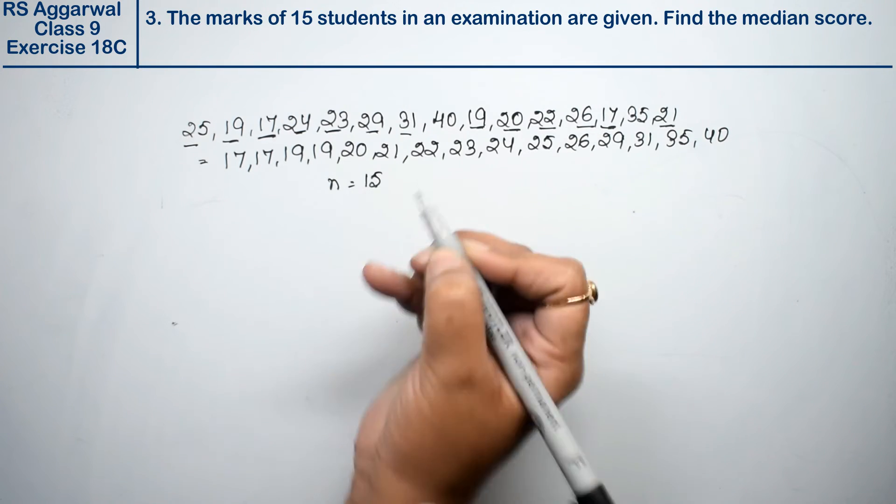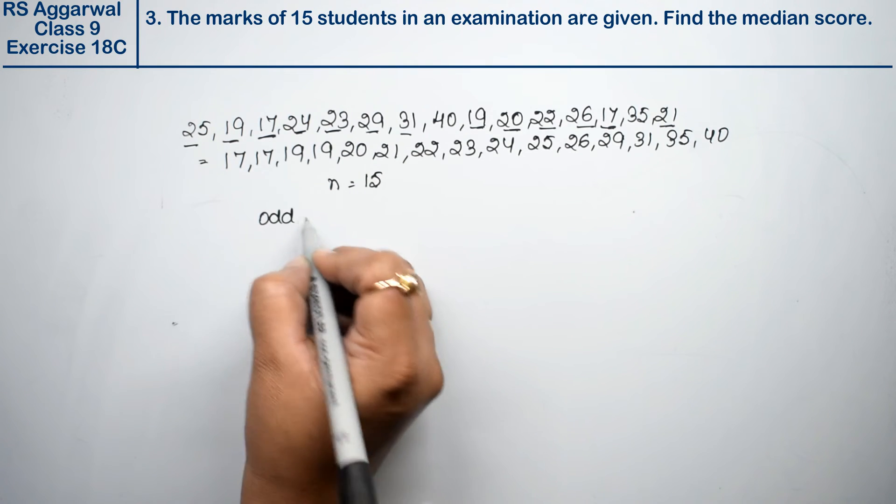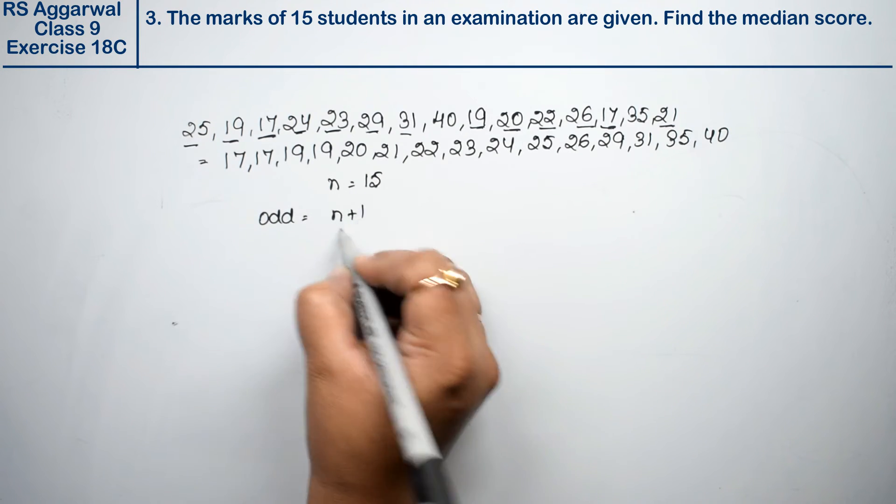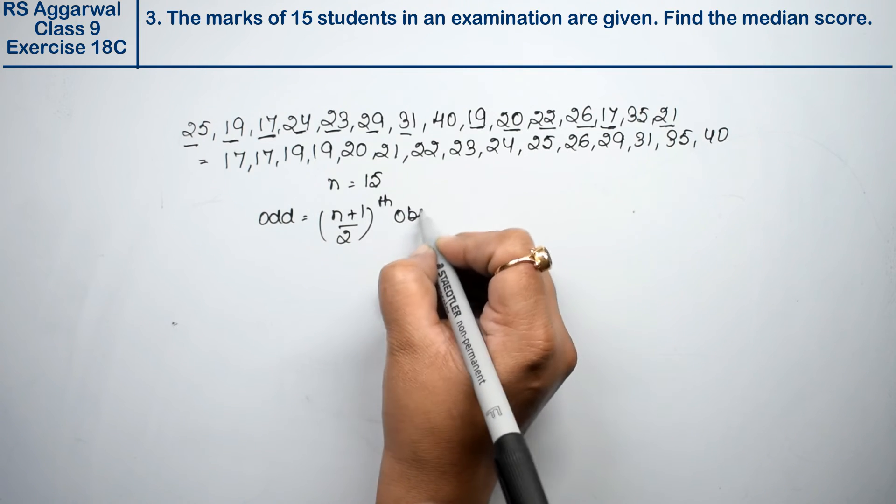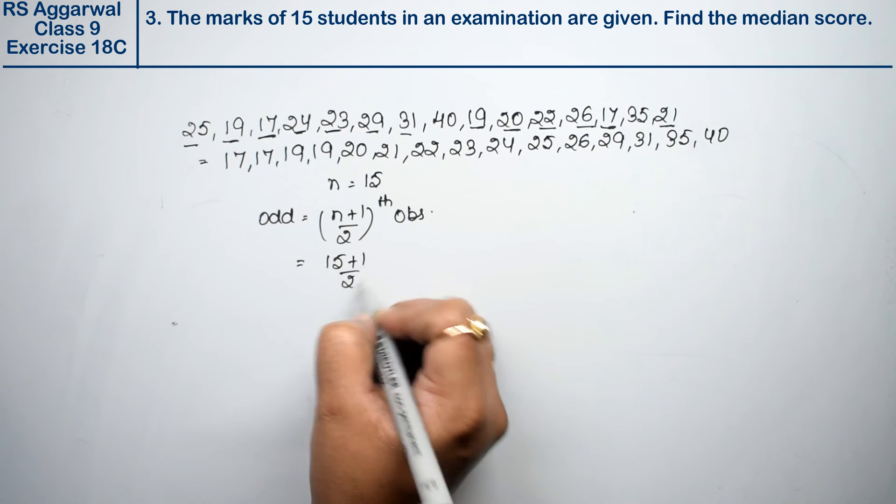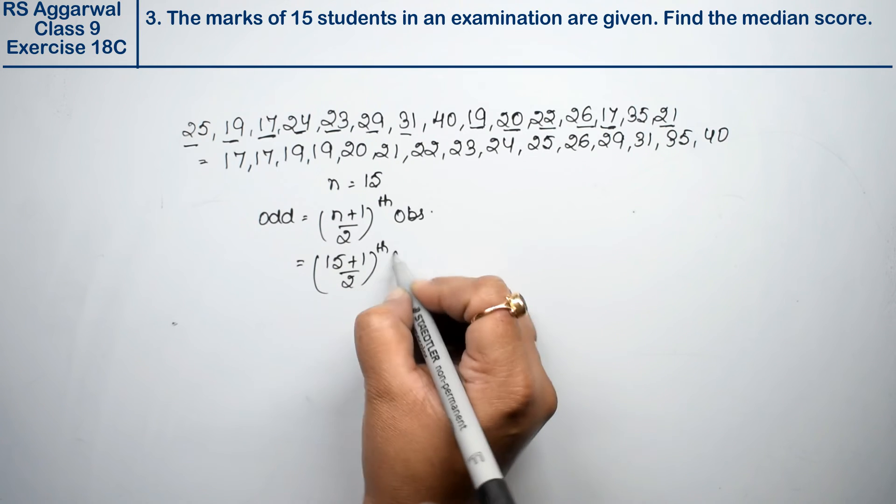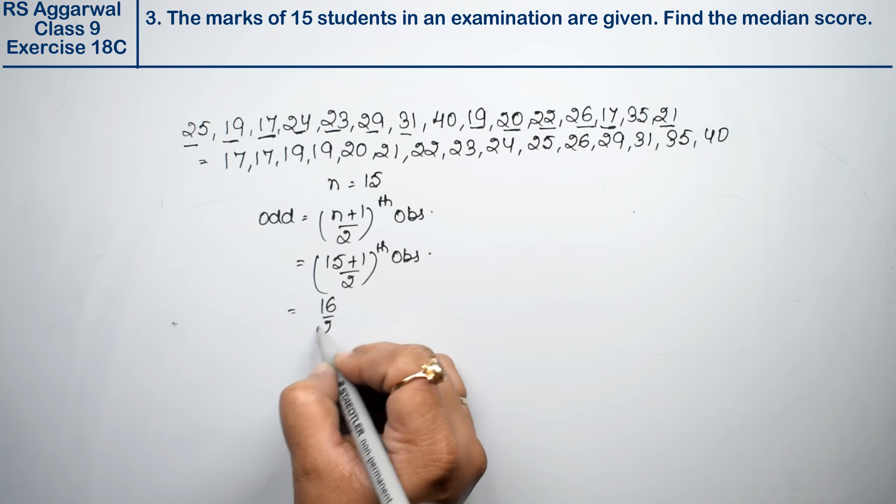15 is an odd number. We know in the case of odd n, the formula is (n+1)/2th observation to find the median. So (15+1)/2th observation. That gives us 16/2, which equals the 8th observation.